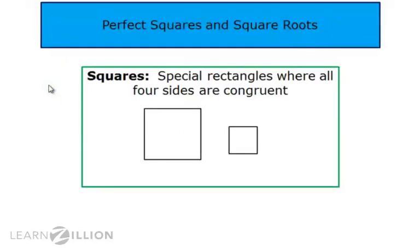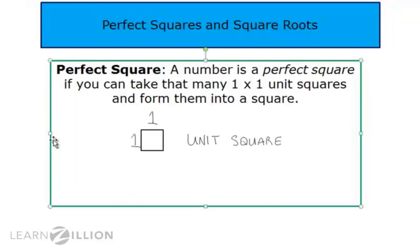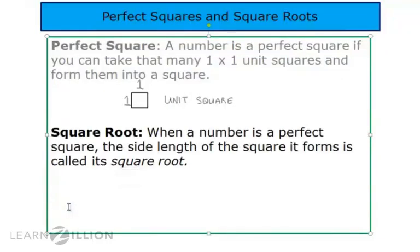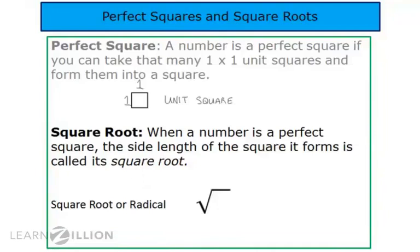Remember that a square is a special type of rectangle where all four sides are congruent. A number is a perfect square if you can take that many one-by-one unit squares and form them into a square. When a number is a perfect square, the side length of the square it forms is called its square root. This is the square root symbol — another word for square root is radical, so this is also called the radical sign. When we see a number underneath this sign, we know we are looking for that number's square root.